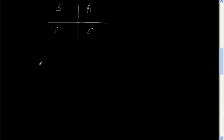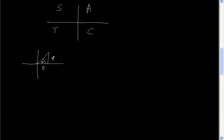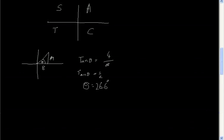Now let's look at an example. If I had a right-angled triangle in the first quadrant, with sides 4 and 8, I need to work out this angle. Because it involves the opposite and the adjacent, you would use tan. So tan theta equals 4 divided by 8, which is a half. So tan inverse of a half would be 26.6 degrees. That's what you've done in GCSE as well.